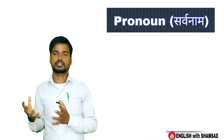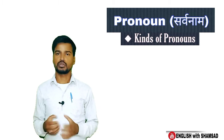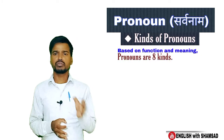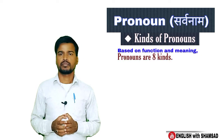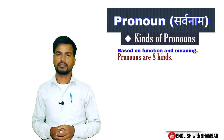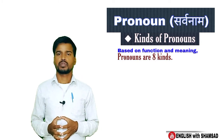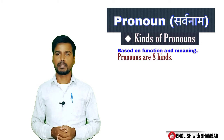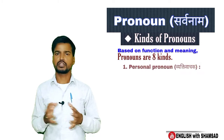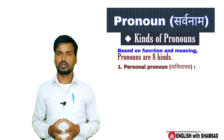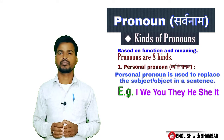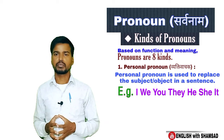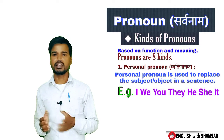Now let's discuss the kinds of pronouns. According to their function or meaning, there are eight kinds of pronouns in English grammar. The first one is personal pronoun. Personal pronoun is used to replace a subject or object in a sentence. For example: I, you, we, they, he, she, it, etc.